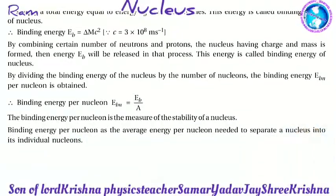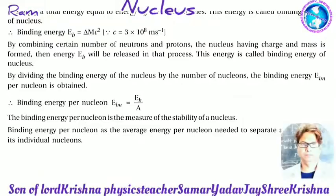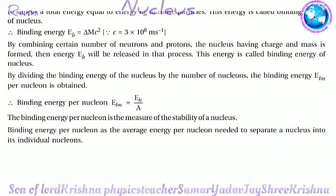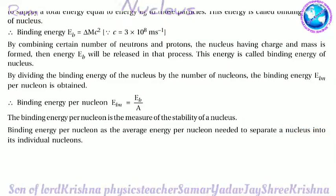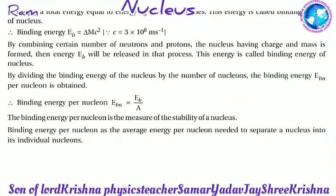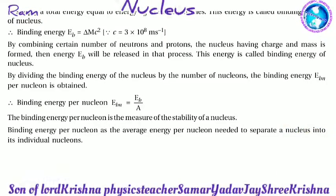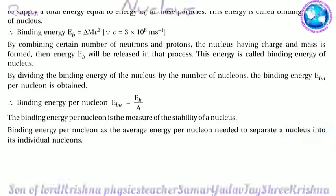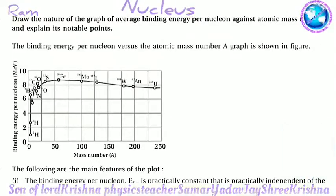The binding energy per nucleon is a measure of the stability of the nucleus. It is defined as the average energy per nucleon needed to separate a nucleus into its individual nucleons.